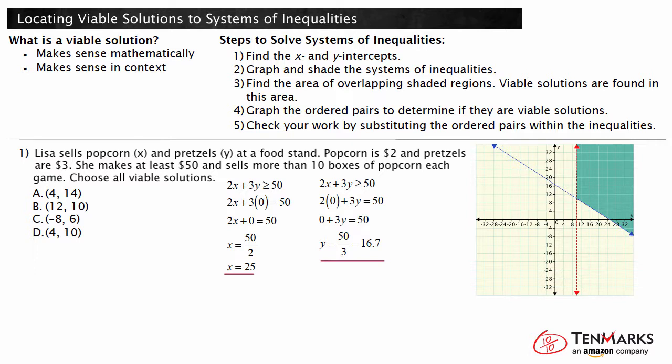x is greater than 10 will be a vertical line. Since x is greater than 10, we will shade to the right. The areas on the figure show where the shaded regions overlap. Any viable solutions to the system of inequalities will be found within this common region.